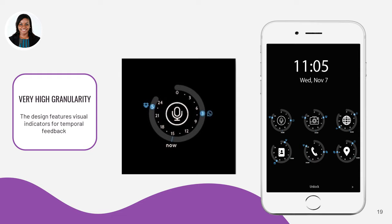And lastly, we have a design that has very high granularity and the information is structured in a data-centric way. So this design shows you what data type is being shared with what app, and it also shows exactly when that information is being shared. This design gives you more visual indicators for temporal feedback that is at a higher level compared to the previous granularity levels.